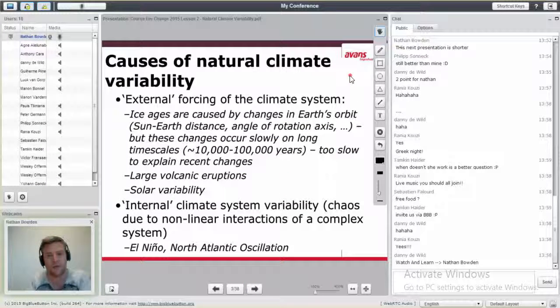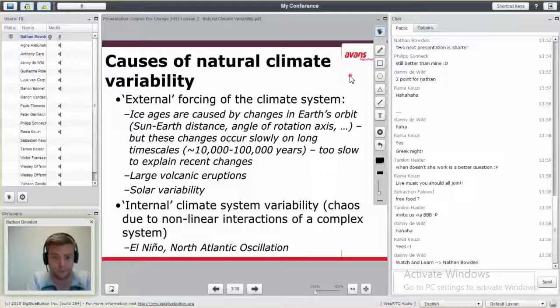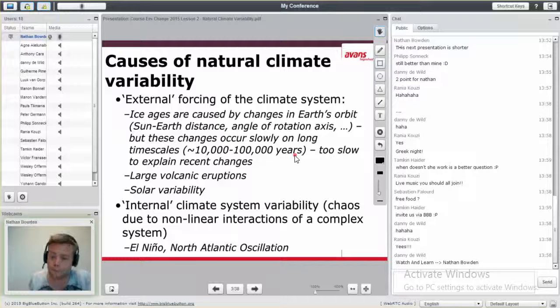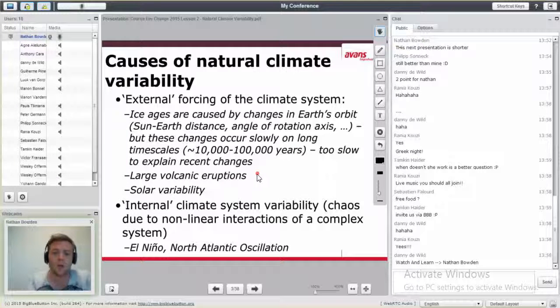There are different causes of climate variability. We often talk about the Earth being a closed system, but it's not completely closed because we get a lot of energy from the sun. So it's external forcing of the climate changes. We have ice ages, which have to do with the distance between the sun and the Earth, the angle and the rotation of the axis. But these are very slow. There are volcanic eruptions. Mount Pinatubo was probably the last big one in the Philippines.